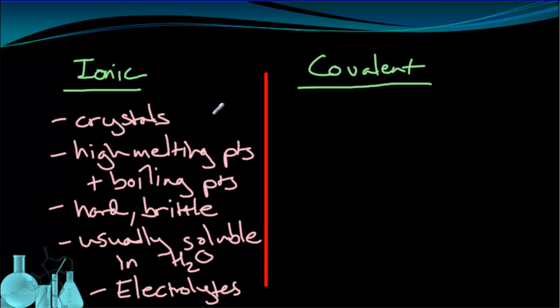So whereas ionic is almost always a solid crystal, covalent can be solid, liquid, or gas. They have relatively lower melting points and boiling points than ionic compounds.